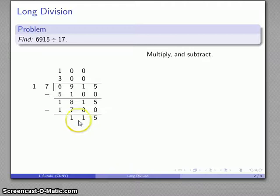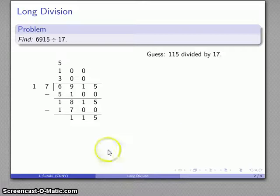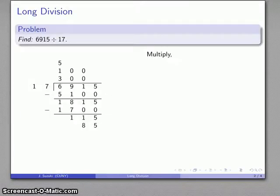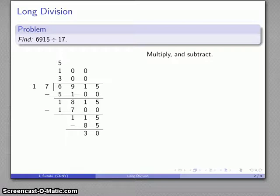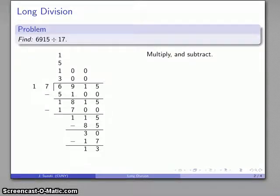17 into 11 doesn't work. 17 into 115, well, guess about 5 times or so, and it doesn't really matter where I write it. 5 times 17 works out to be 85, and now I can just do the straight subtraction to get me 30. 17 into 30 only goes one time. 1 times 17 is 17, subtract and I get my remainder 13.